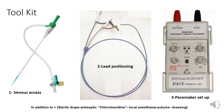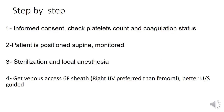For inserting a temporary pacemaker, our toolkit includes — in addition to drapes and antiseptic — local anesthesia, sutures, dressing, venous access, lead, and most importantly the pacemaker setup. We start by obtaining formal consent from the patient, checking the coagulation profile, positioning the patient supine, connecting to a monitor, then proceeding with sterilization and local anesthesia.